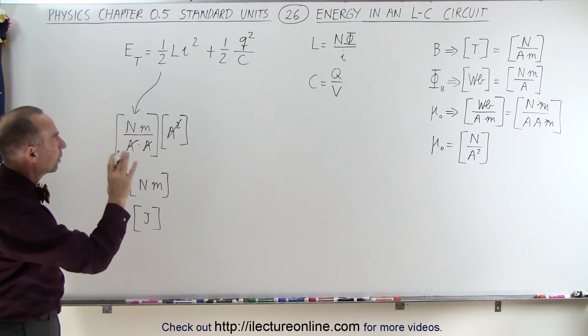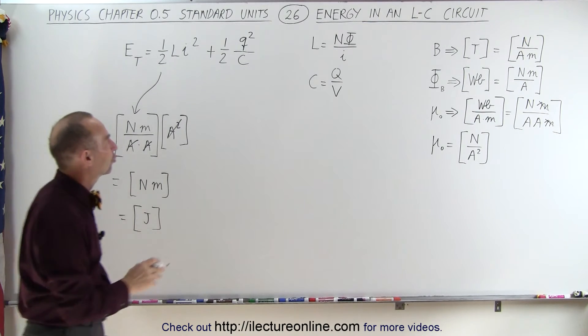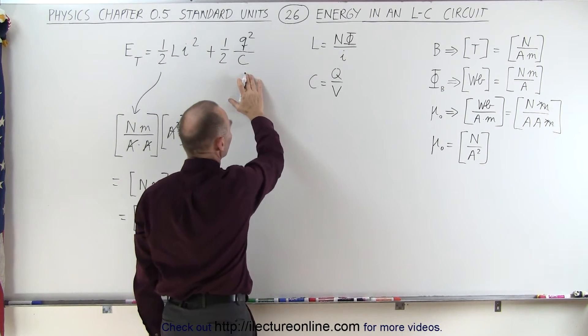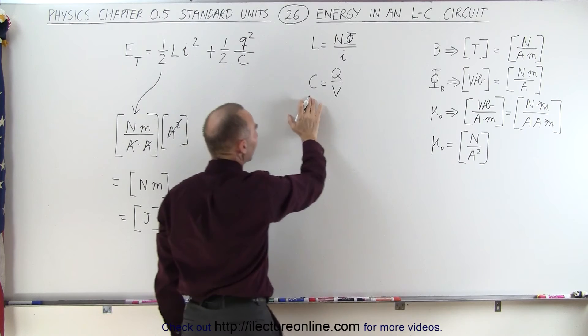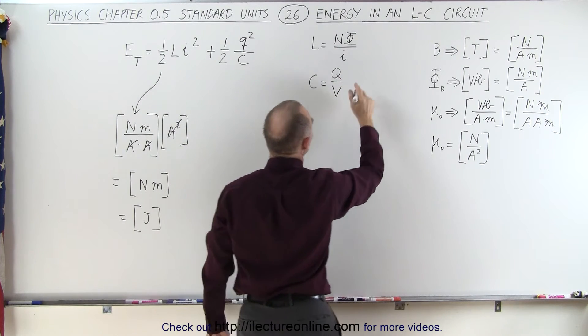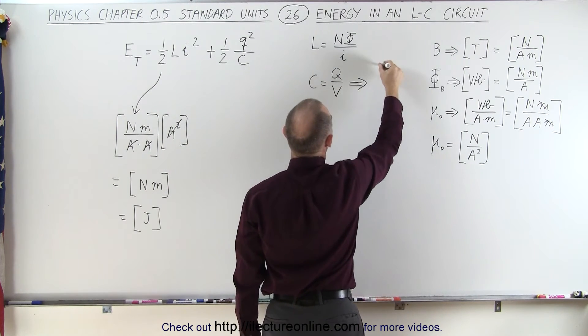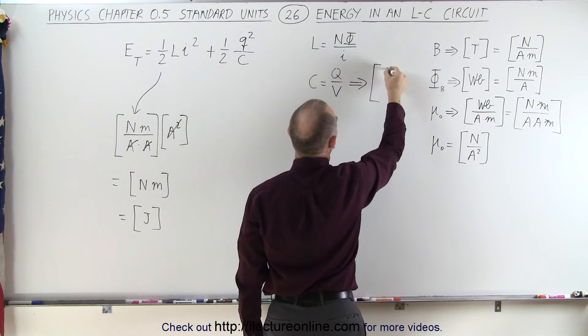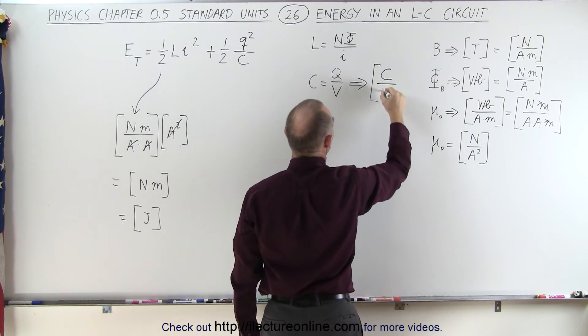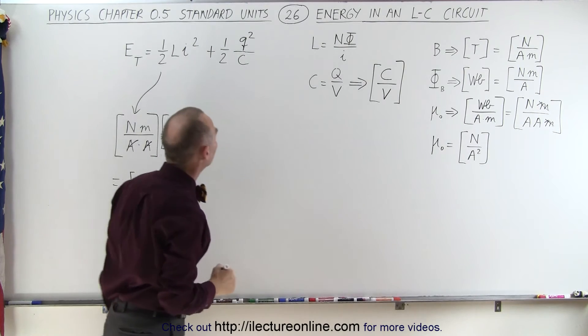What about the energy stored on a capacitor? It's charge squared divided by the capacitance. Now, the capacitance is defined as the charge divided by the voltage, and therefore, the units of that can be defined as charge, which is coulombs, and the voltage, which is volts. So we have coulombs per volt.